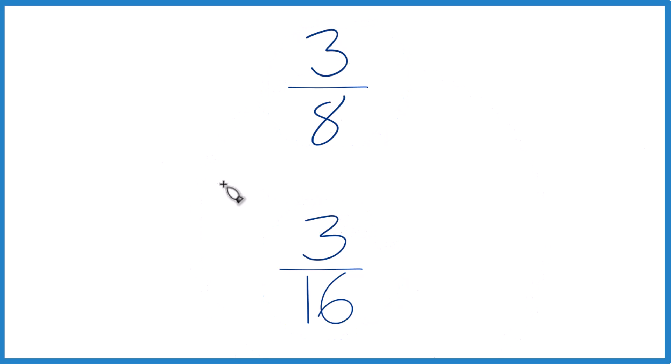So the first way you could do this is just take a calculator, divide 3 by 8, get your decimal, divide 3 by 16, get a decimal, and compare them. See whether 3 8ths is larger than 3 16ths.